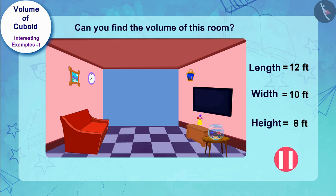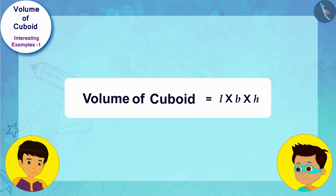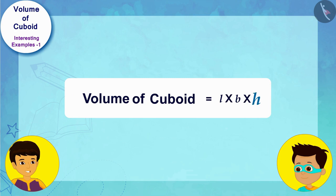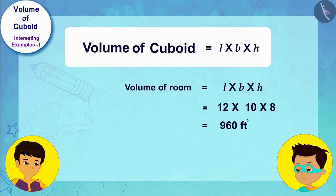If you want, you can find the answer by stopping this video. As we have written in our mathematics formula book, the volume of a cuboid is equal to the product of its length, width, and height. Now I just write the length of the room as 12 feet, width as 10 feet, and height as 8 feet respectively in the places of L, B, and H.